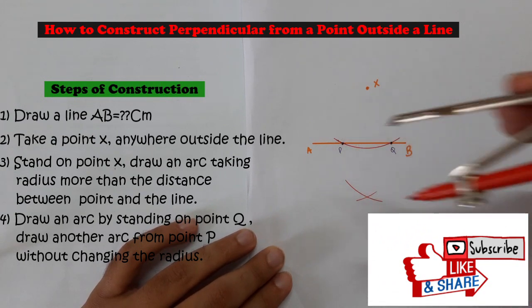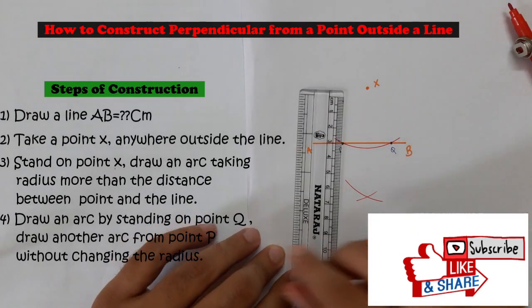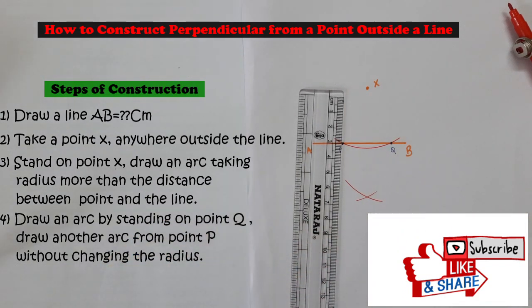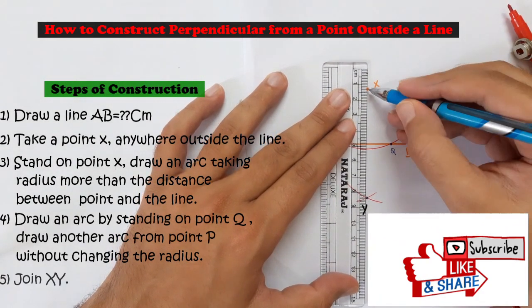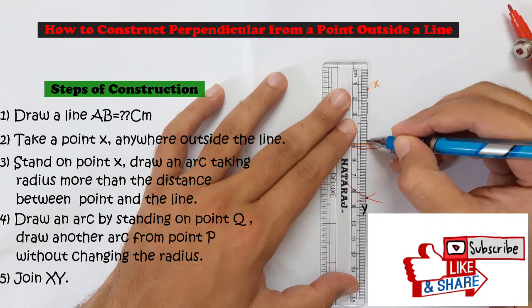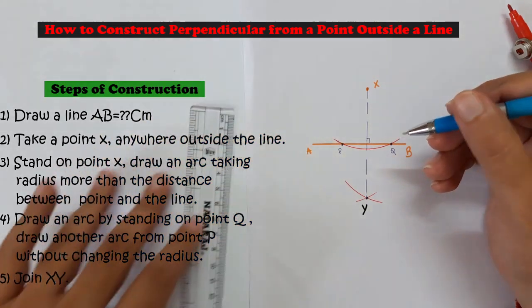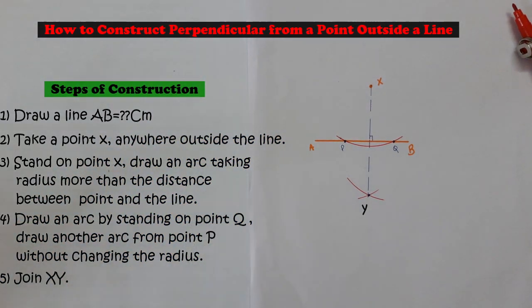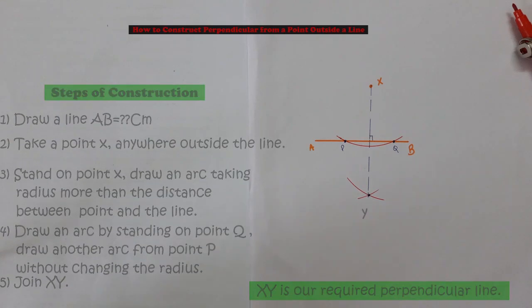And from point P draw an arc cutting the previous arc. So something like this you will find. And from here, from this point, join X. From this point join X. So this is perpendicular from a point which is outside the line. Thank you for watching.